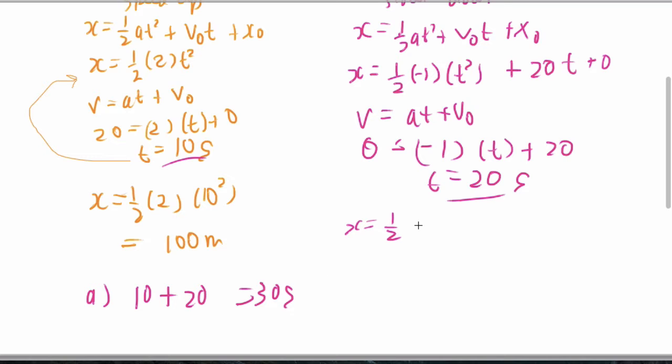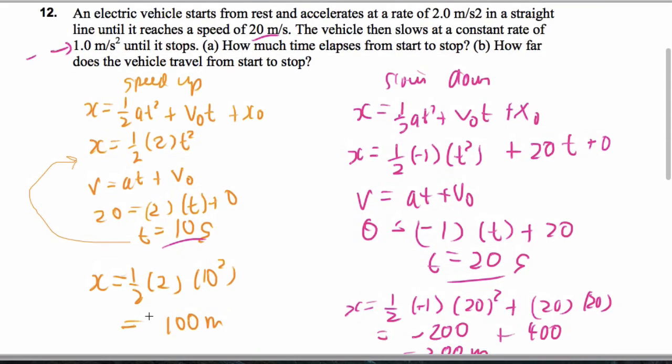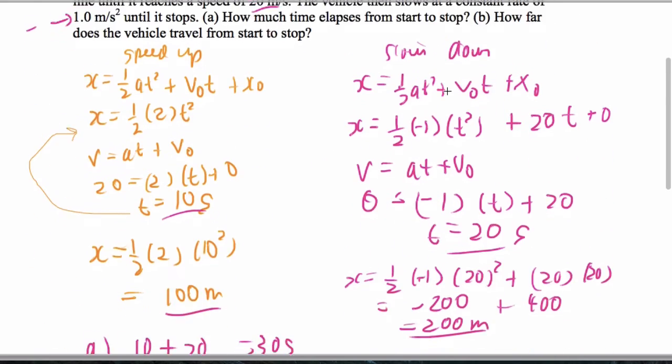x is 1 half times negative 1 times 20 squared plus 20 times 20. That's going to be negative 200 plus 400. That gives me 200 more meters covered. So for part B, how far does it travel? That's going to be the 100 plus the 200. And that's going to give me 300 meters. So that is problem 12.